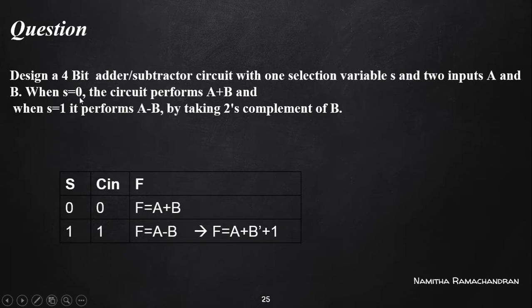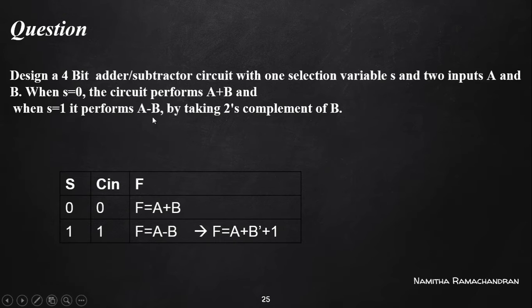When S equals 0, the circuit must perform the A plus B operation. When S equals 1, it performs A minus B by taking the two's complement of B.